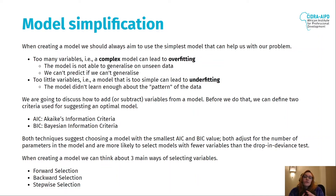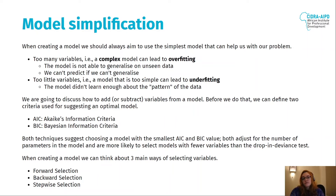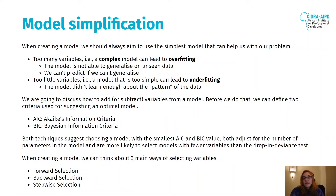Whenever we're building a model, we might need to add or subtract variables. To do that, we can use two metrics: AIC — Akaike Information Criterion — and BIC — Bayesian Information Criterion. Both help us with model simplification. We want to choose the model with the smallest AIC or smallest BIC. We have three main ways of doing variable selection: forward selection, backward selection, and stepwise selection.